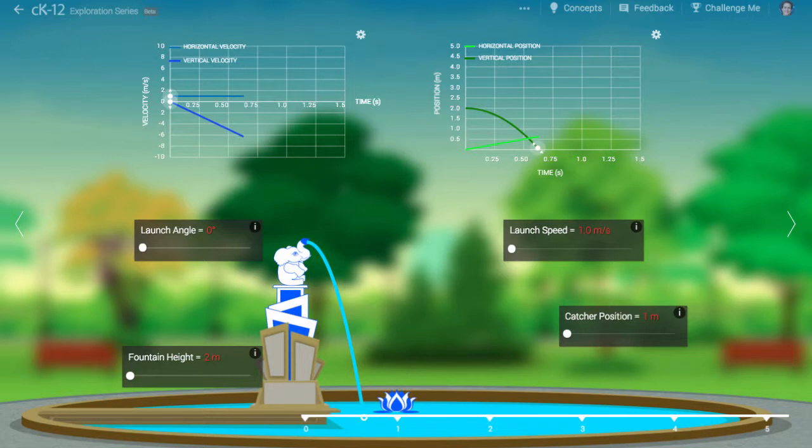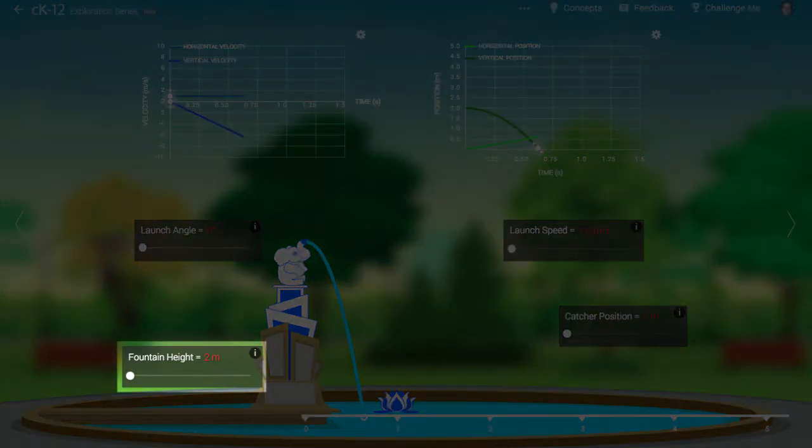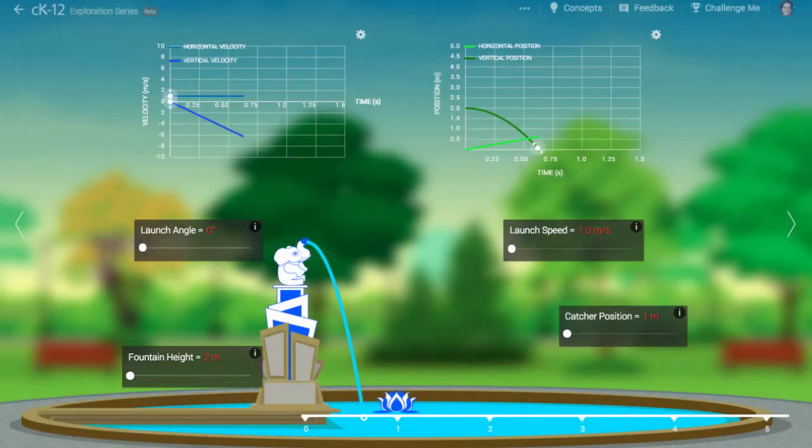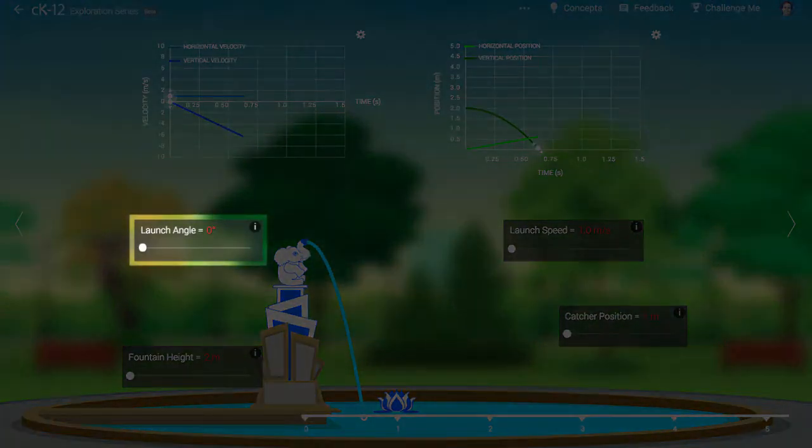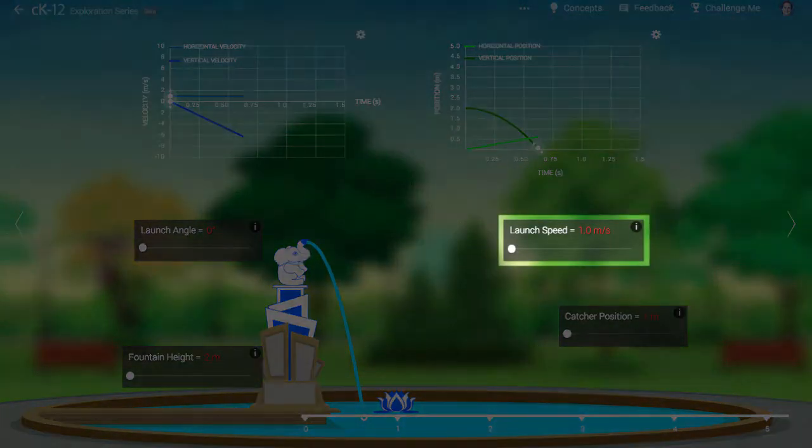Initially, the water launches horizontally from an aperture 2 meters above the ground. We know the water is traveling horizontally because the launch angle is 0 degrees. The launch speed is 1 meter per second.